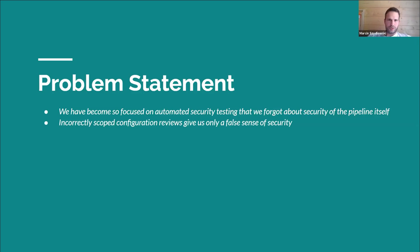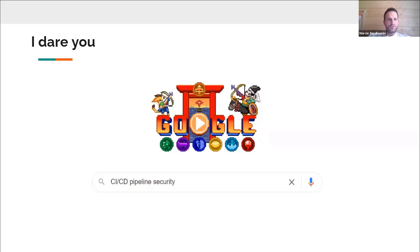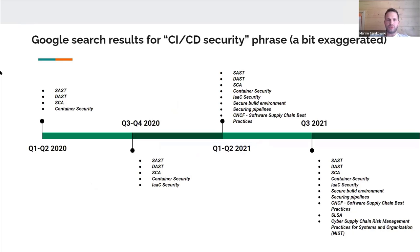What's even worse is that some teams and companies would do a configuration review of, say, their CI component in the pipeline, but the problem is that only gives a false sense of security — we're reviewing only one of the multiple components of the entire pipeline. For example, reviewing your CI tool without paying enough attention to your SCM tool, your cloud environment, or your artifact management. If you Googled 'CI/CD pipeline security' in early 2020, it was very hard to find anything — just a few articles briefly touching the topic.